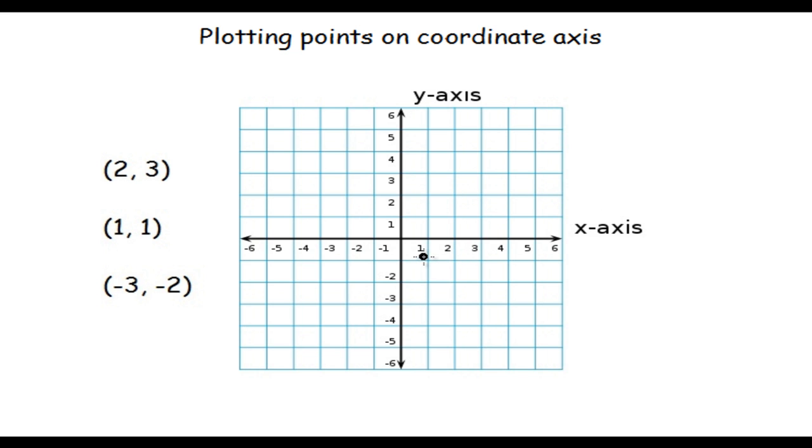For this we will be counting 2 on the positive x-axis and 3 on the positive y-axis. So this means 1 and 2 this line, and this means 1, 2, 3 this line. So this point will be (2, 3).